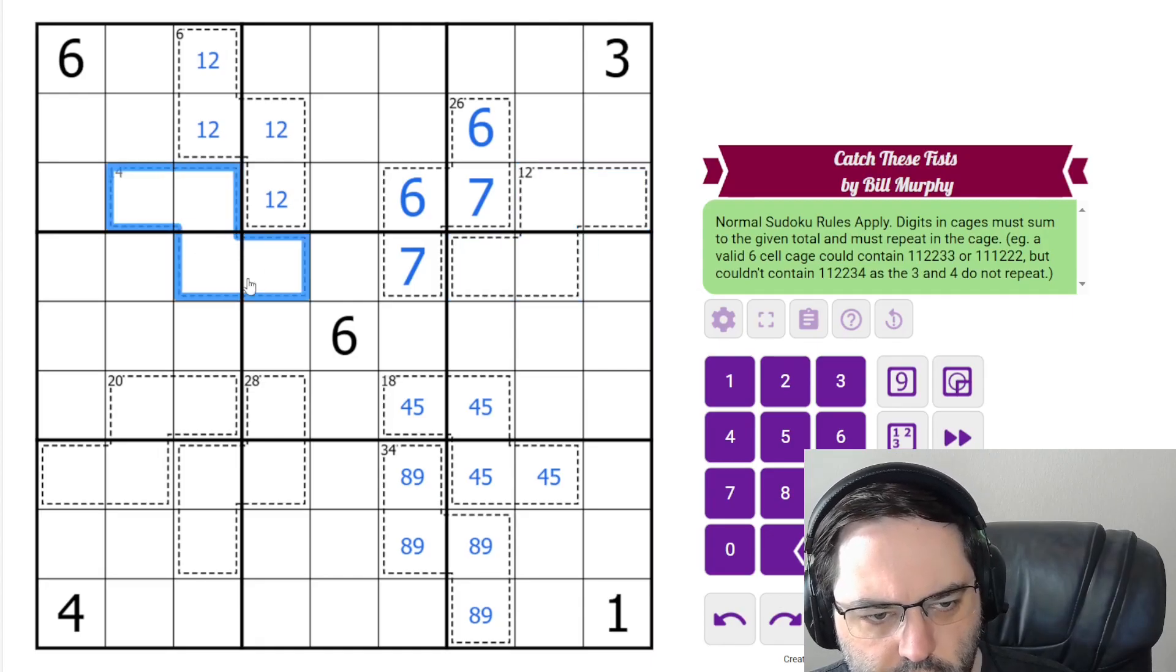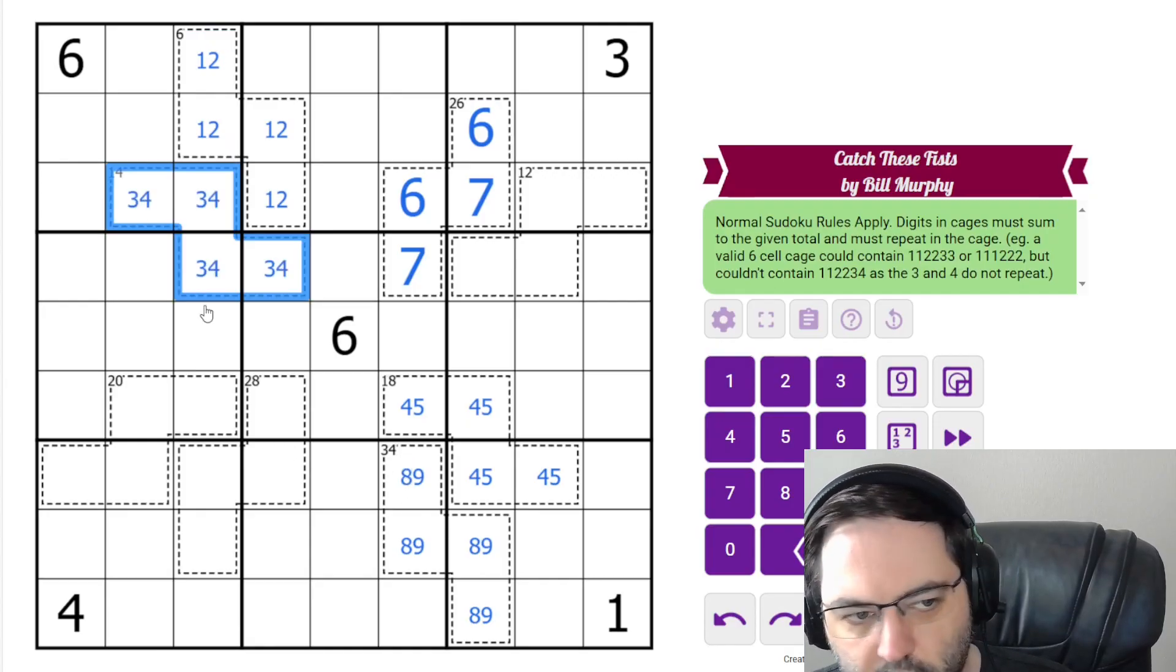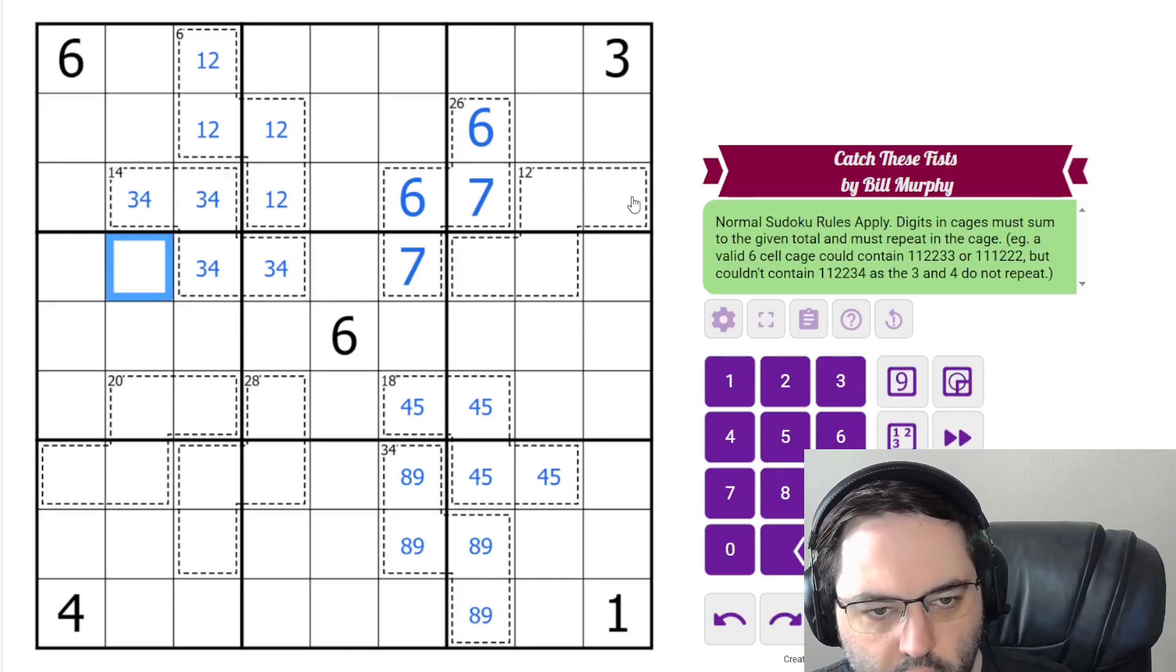Now we can look at the 14. 14 works the same as the 18 or the same as the 26 over here. Can't contain one, two. So one, two sees all of those cells. So the next lowest we can have is three, three, four, four. So that works.